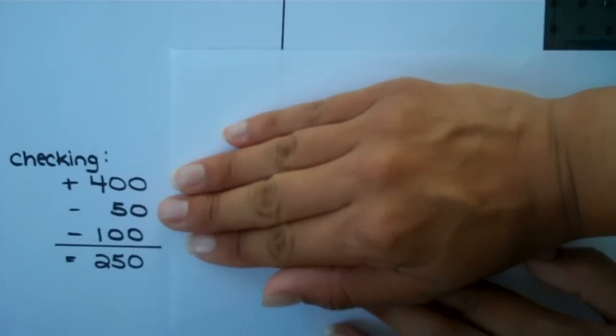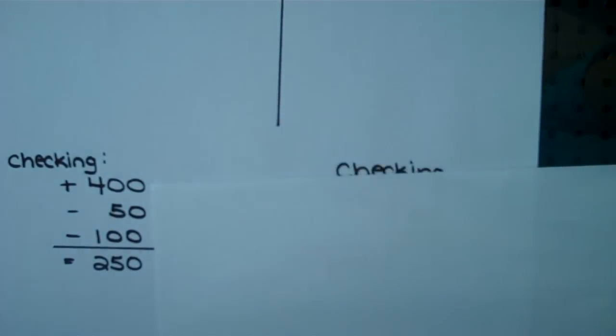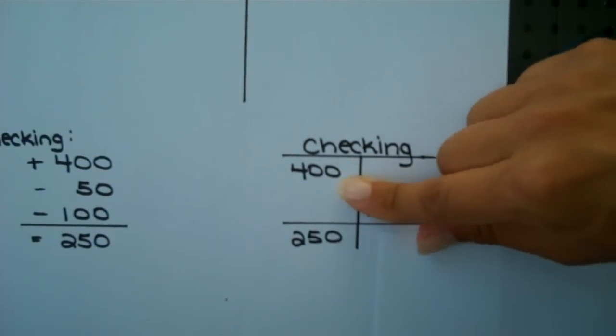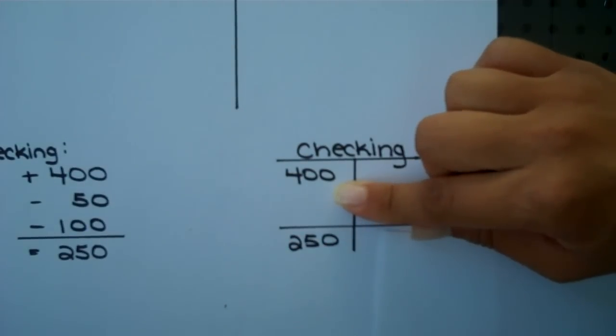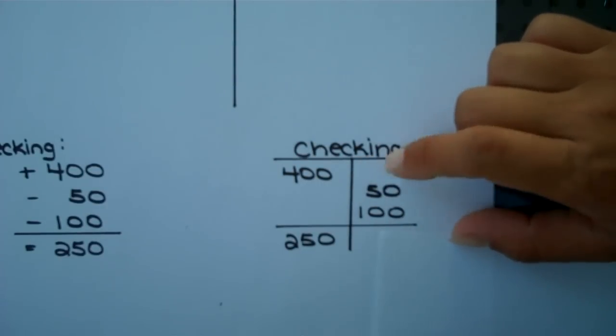Well, we're going to take that same information and now put it into our T-account. So for your checking account, you started with $400. We'll go ahead and put that on the debit or the left side since checking is an asset and increases with a debit.